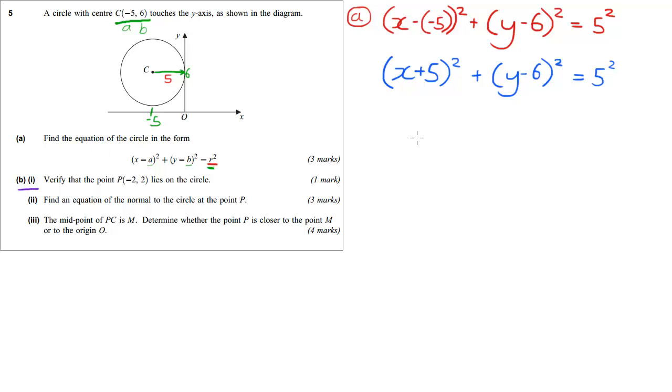Let's move on to question B. Verify that this point lies on the circle. We have an x-coordinate there and a y-coordinate there, and we have an x and a y here. So let's just put those numbers in and it should all equal out.